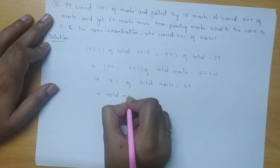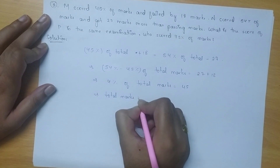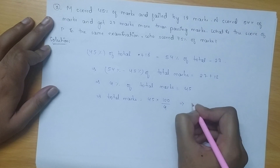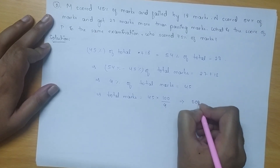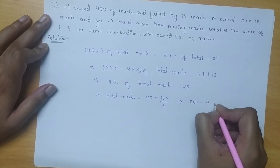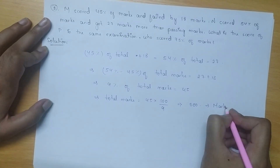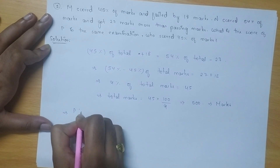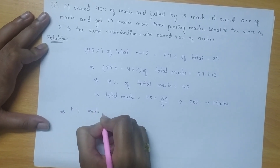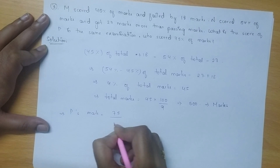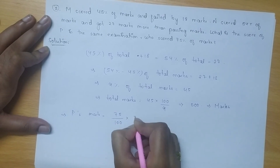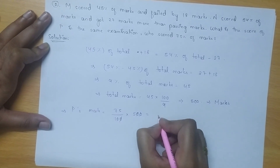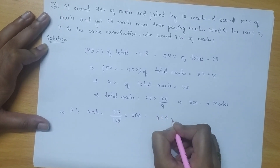Total marks will be 45 multiplied by 100 divided by 9, which will be equal to 500. So, the total marks are 500. In order to find out 75% of it, P's marks will be equal to 75 divided by 100 multiplied by 500, which gives 375 marks.